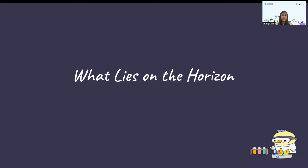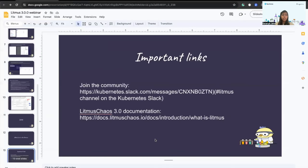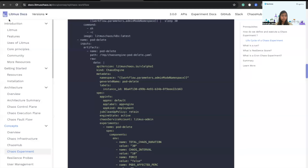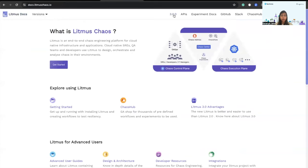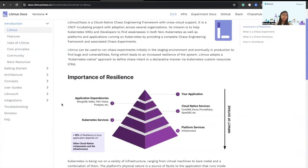There are also regular bug fixes and enhancements going along with the other features. In upcoming releases we are also planning to add more features. Lastly, I just wanted to let the community know that if anyone is interested in joining the community and getting started with chaos experimentation or wants to contribute to LitmusChaos, they can join the Litmus channel in the Kubernetes Slack. Also, the LitmusChaos 3.0 documentation has been updated and can be found online.